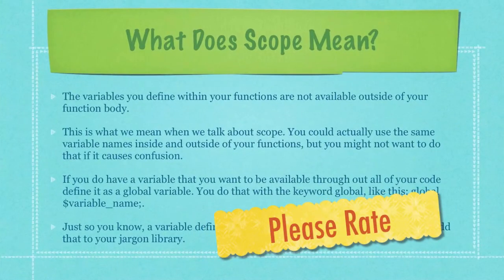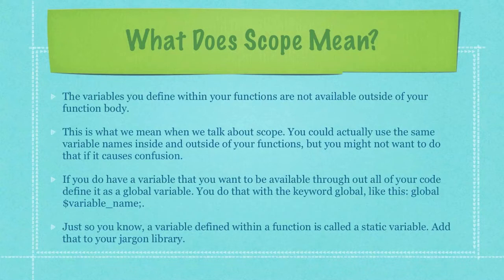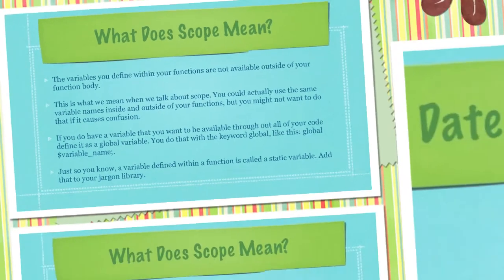The variables you define within your functions are not available outside of your function body. This is what we mean when we talk about scope. You could actually use the same variable names inside and outside of your functions, but you might not want to do that as it will cause confusion. If you do have a variable that you want to be available throughout all of your code, define it as a global variable using the keyword global, followed by a variable name. Just so you know, a variable defined within a function is called a static variable.